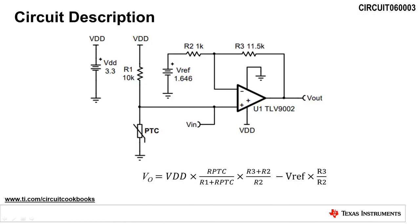This schematic represents a temperature sensing circuit for a PTC thermistor. A PTC thermistor has a positive temperature coefficient, which means its resistance increases with temperature. A resistor in series with a PTC thermistor forms a resistor divider. A change in temperature changes the PTC resistance, which changes the input voltage, VIN.